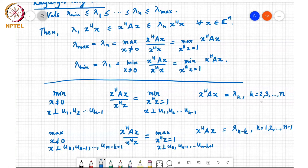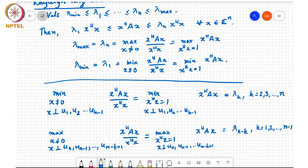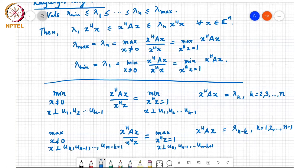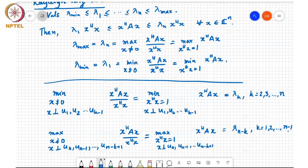And similarly, coming down from the largest eigenvalue, if you solve a maximization problem subject to x being perpendicular to the first u n, u n minus 1 up to u n minus k plus 1, that is k minus 1 eigenvectors corresponding to the top k minus 1 eigenvalues of the matrix A, of the same objective function x-Hermitian Ax over x-Hermitian x, that is going to give you lambda n minus k for k equal to 1, 2 up to n minus 1.